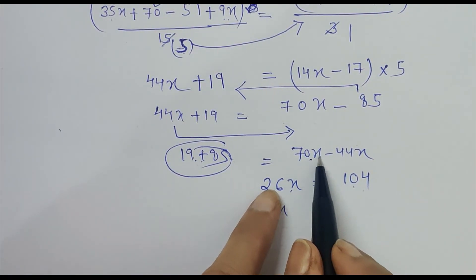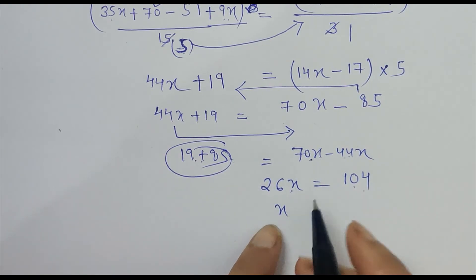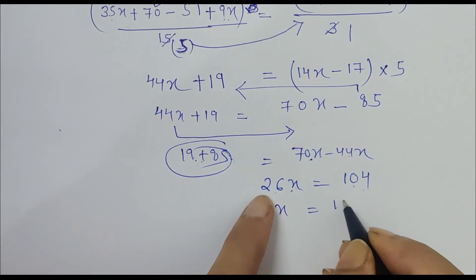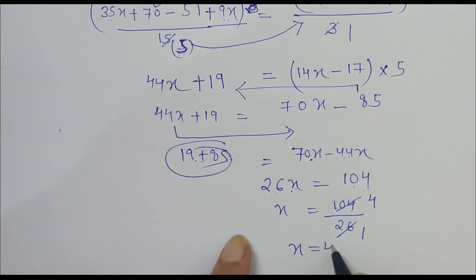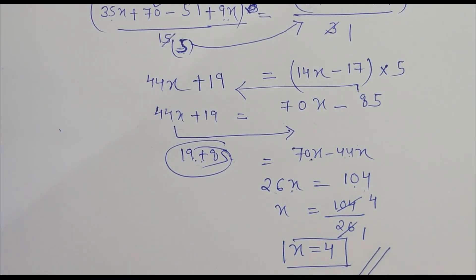So leave x on one side and shift 26 to the denominator. So 26 times 1 is 26, 26 times 4 is 104. So the value of x is 4. So this is how it is calculated. Thank you.